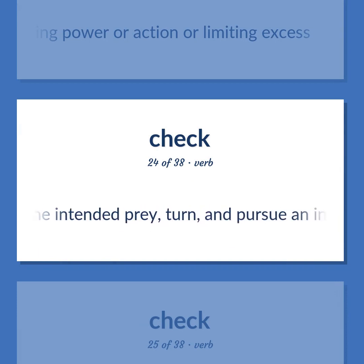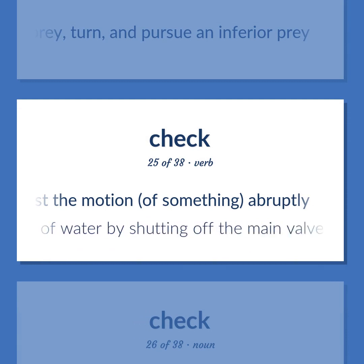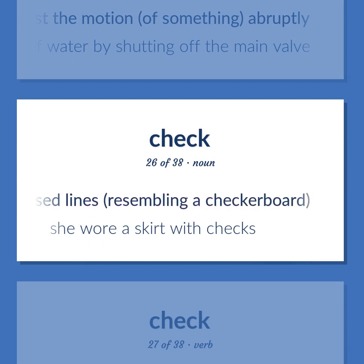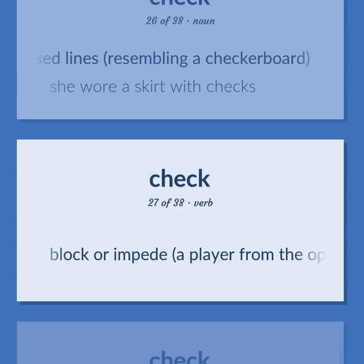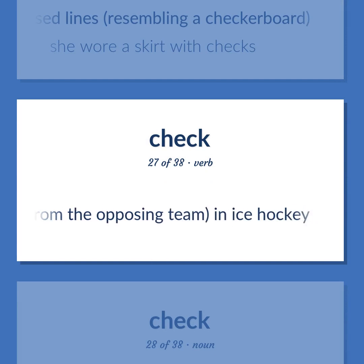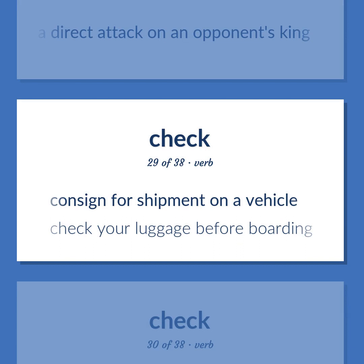Check: abandon the intended prey; turn and pursue an inferior prey. Arrest the motion of something abruptly — 'He checked the flow of water by shutting off the main valve.' A textile pattern of squares or crossed lines resembling a checkerboard — 'She wore a skirt with checks.' Block or impede a player from the opposing team in ice hockey. Chess: a direct attack on an opponent's king. Consign for shipment on a vehicle — 'Check your luggage before boarding.'